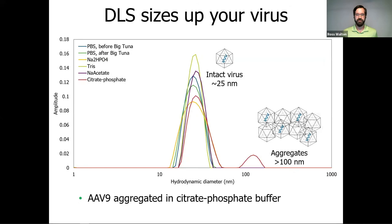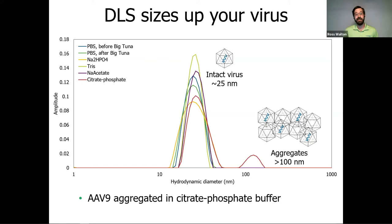DLS is a tool to look at the size distribution of particles based on scattering intensities over time. In most buffers and in the starting material, we had a single peak in the DLS intensity distribution, meaning all particles were monodispersed and about 25 nm in size — what you'd expect for an intact virus. However, the citrate phosphate buffer, shown as the red line, had a second peak much larger than an intact virus should be — those were aggregates. Since the ELISA is specific for intact particles and doesn't bind aggregates, that explained why percent recoveries were so low. This shows the value of using DLS before an experiment as a quick check.